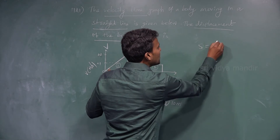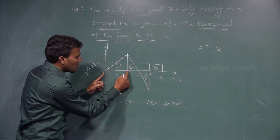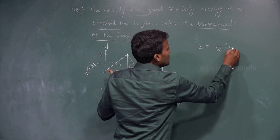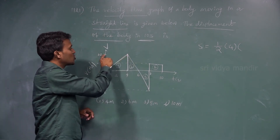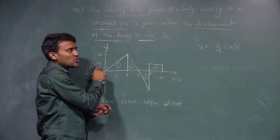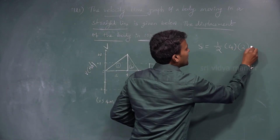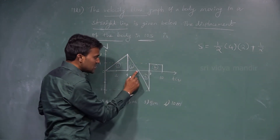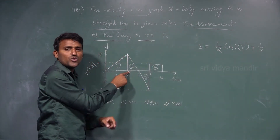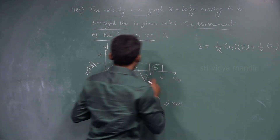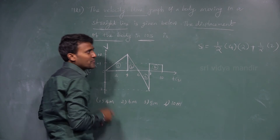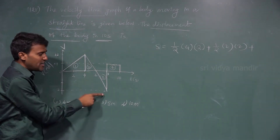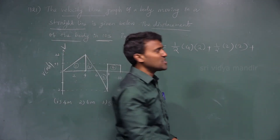For the first triangle: displacement = half × base × height = half × (4 − 0) × (2 − 0) = half × 4 × 2. For the second triangle: half × base × height = half × (6 − 4) × (2 − 0) = half × 2 × 2.